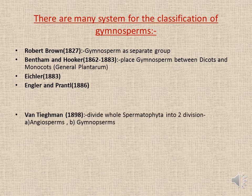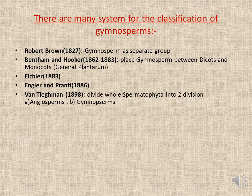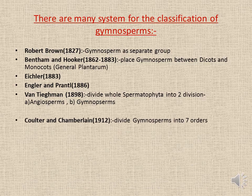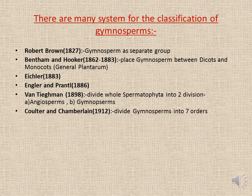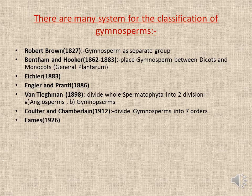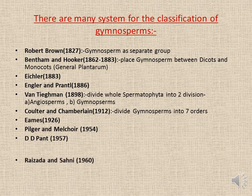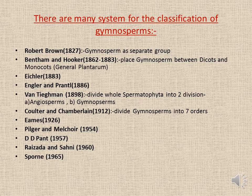Bentham divided Spermatophyta into two divisions: Angiosperm and Gymnosperm. Coulter and Chamberlain's system of classification divided Gymnosperms into seven orders. Ames' classification system, Pilger and Melchoir's classification system, and De Candolle's Gymnosperm classification were also proposed. Raizada and Sahni classification system, Sporne's system of classification, and Bierhorst's system of classification are also notable.